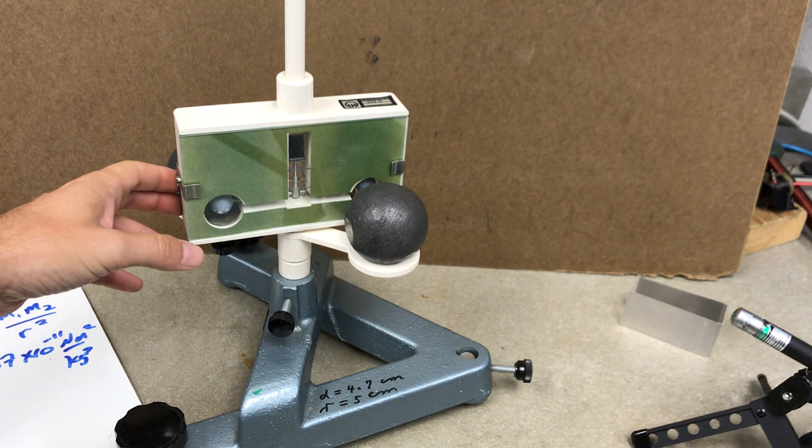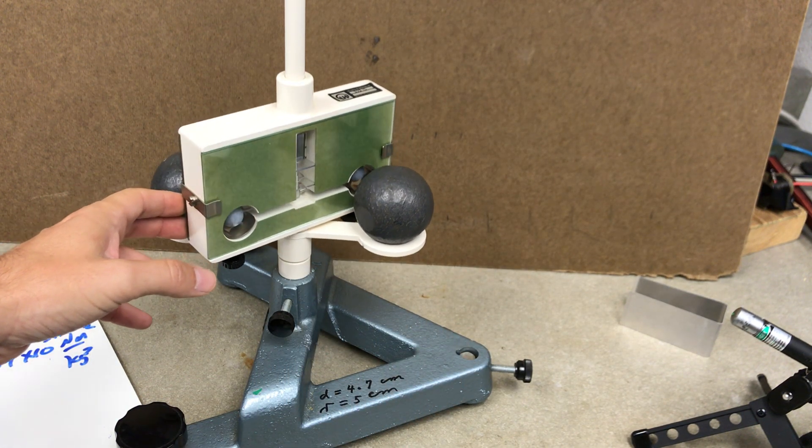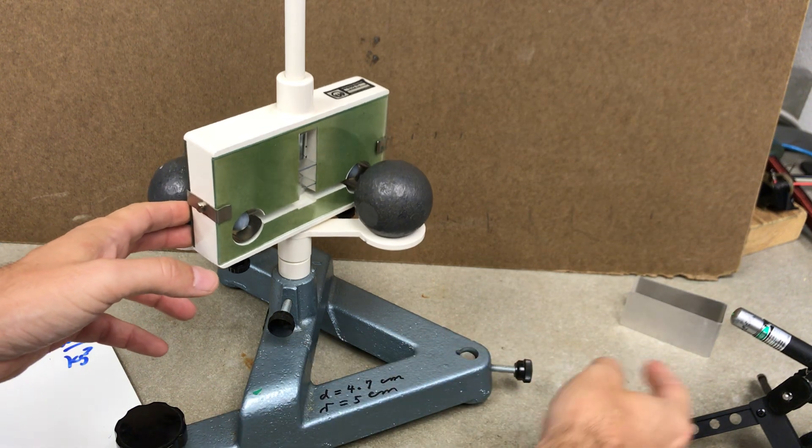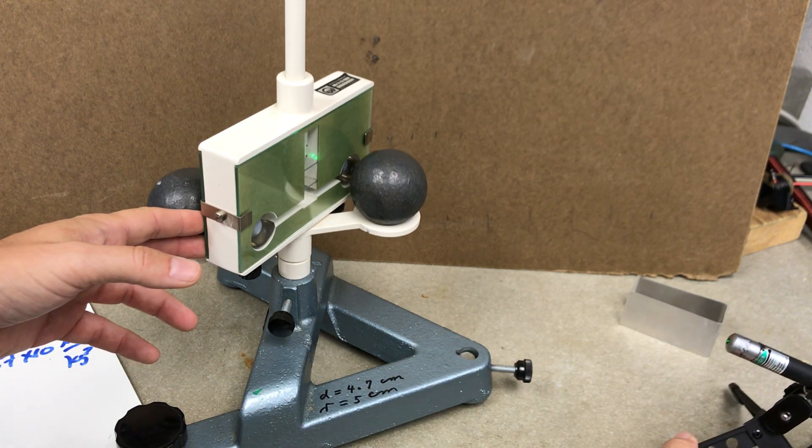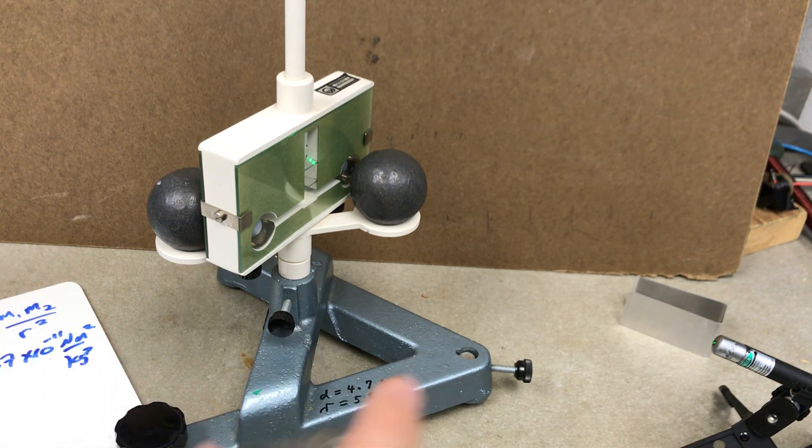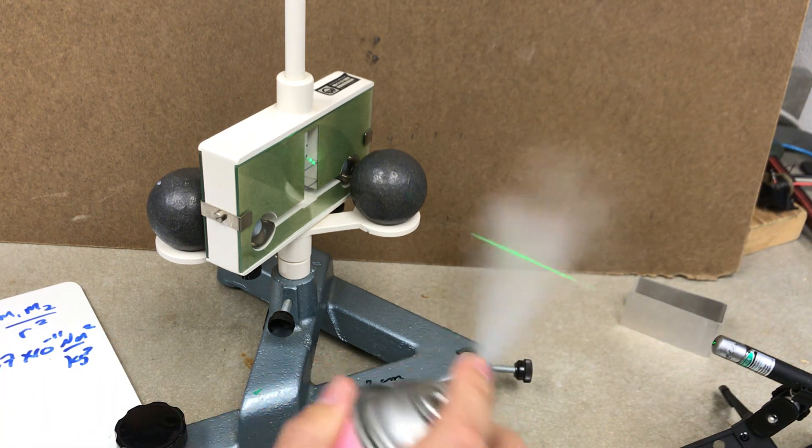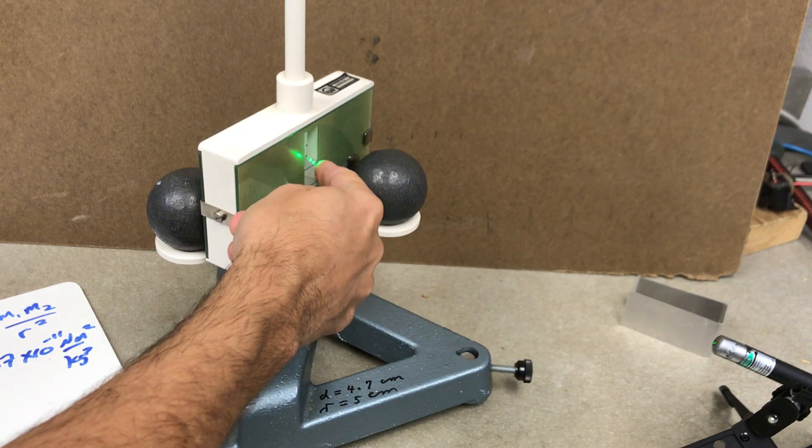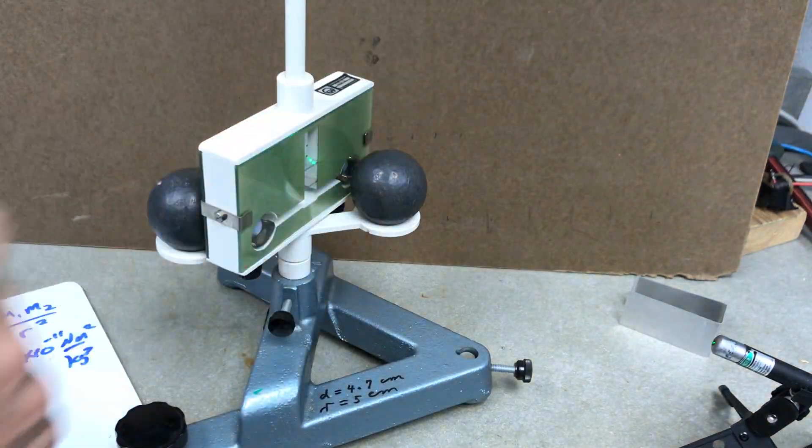It's kind of a hard experiment to show in real life because it's very sensitive. You would take a laser, actually have a laser right here, and I'd shine it. You can see the laser. So you see the laser's coming in here and it reflects off to a wall.